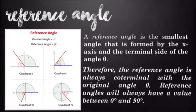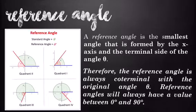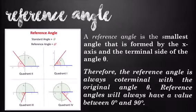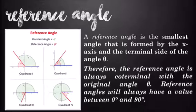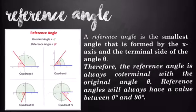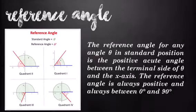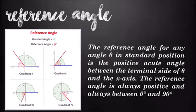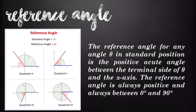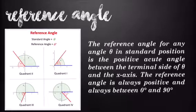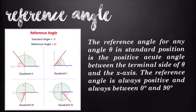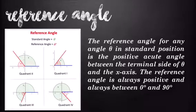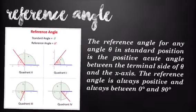Therefore, the reference angle is always coterminal with the original angle theta. Reference angles will always have a value between 0 degrees and 90 degrees. The reference angle for any angle theta in standard position is the positive acute angle between the terminal side of theta and the x-axis. The reference angle is always positive and always between 0 degrees and 90 degrees.